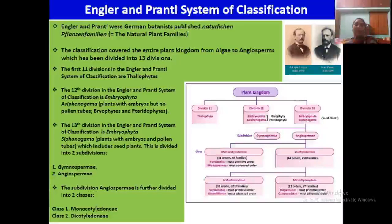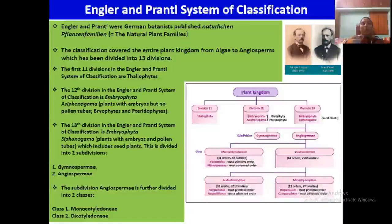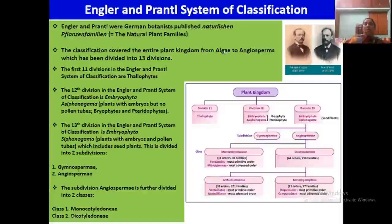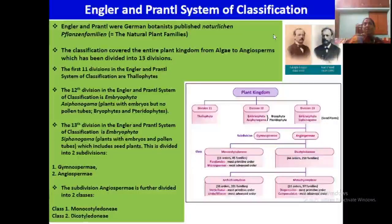The Engler and Prantl system is a phylogenetic system. They were German botanists who published the book Natürliche Pflanzenfamilien. Their classification covers the entire kingdom from algae to angiosperms, divided into 13 divisions. The plant kingdom includes divisions 11, 12, and 13; the others — divisions 1 to 10 — cover algae, fungi, etc. Division 11 is thalophytes, which includes algae and fungi.